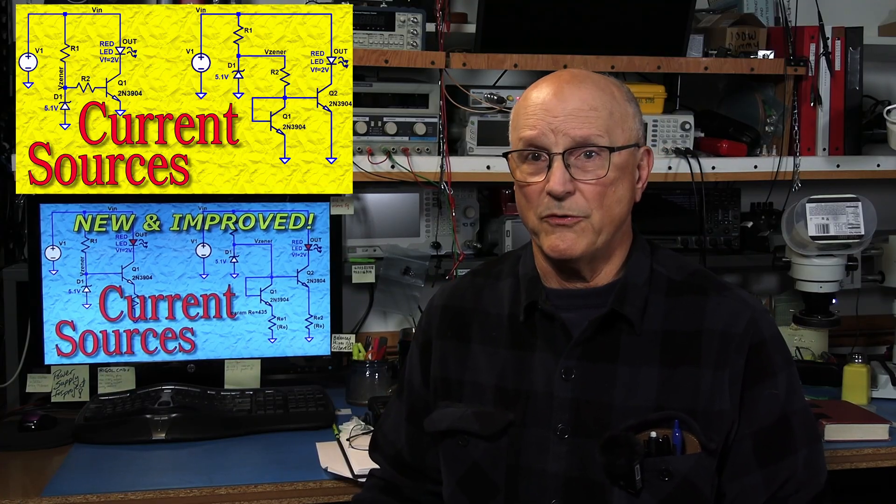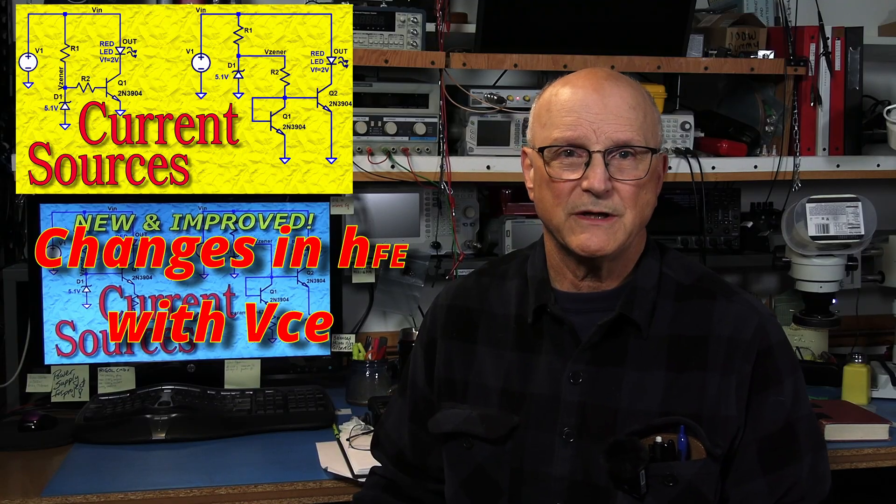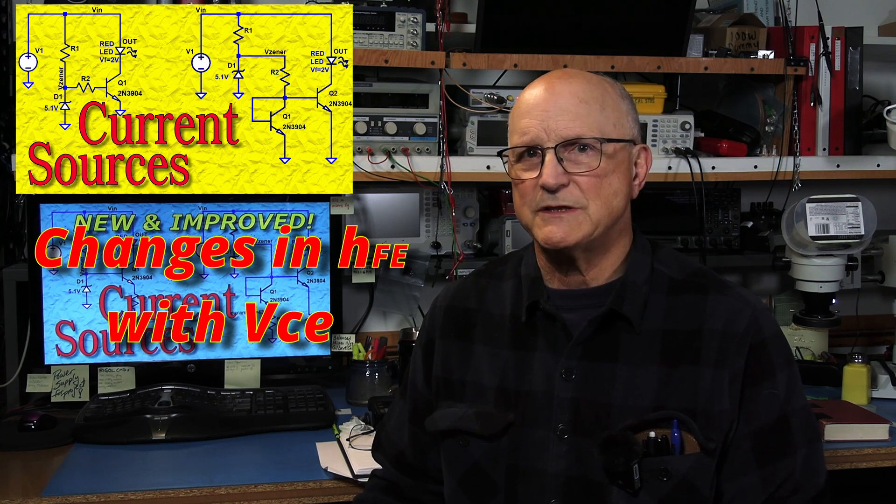These current sources both suffered from one very significant fault. They both were subject to changes in the current gain of the output transistor with changes in its collector emitter voltage. I will show you how to significantly reduce the effects of this shortcoming in this video.